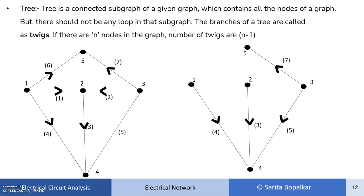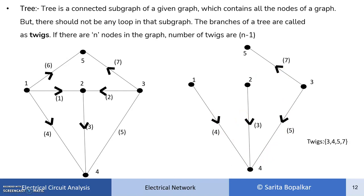There should not be any loop. If we include branch 1 in this tree, it forms a loop, so it cannot be part of the tree. So a tree is a subgraph which includes all nodes, these nodes are connected, and there should not be any loop. For example, another tree can be formed using branches 6, 1, 4, and 5. The branches of a tree are called twigs, so branches 3, 4, 5, and 7 are the twigs for this particular tree. This is an important method, because our analysis of electrical networks depends on it.